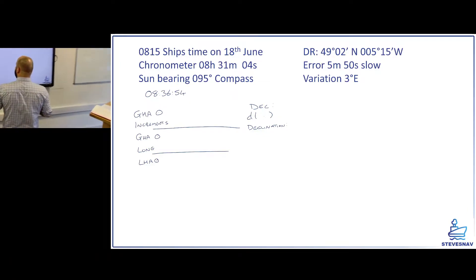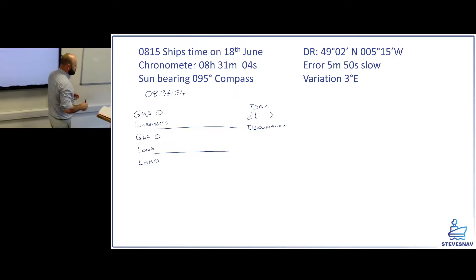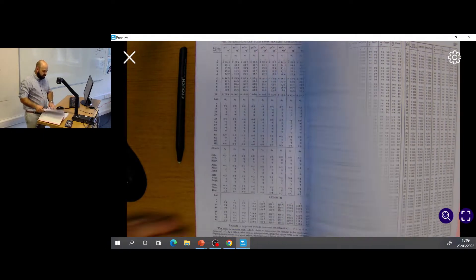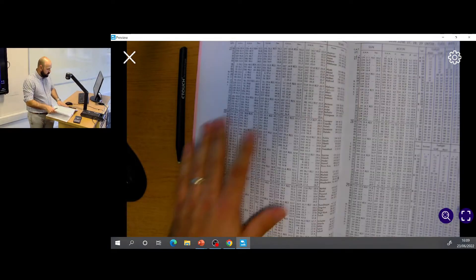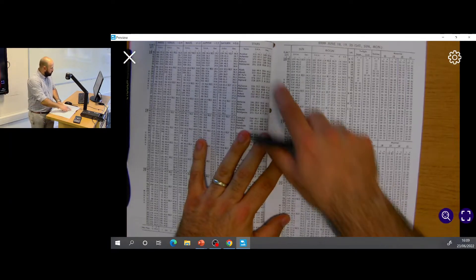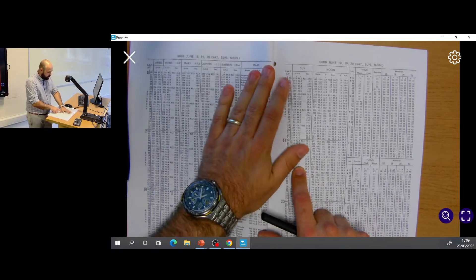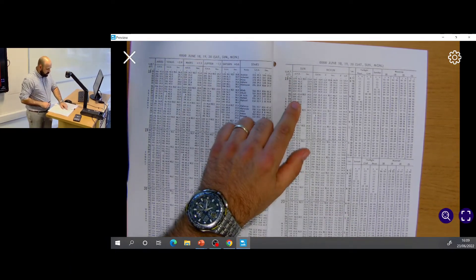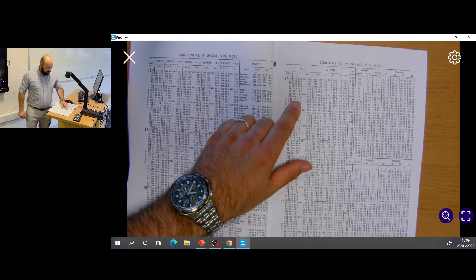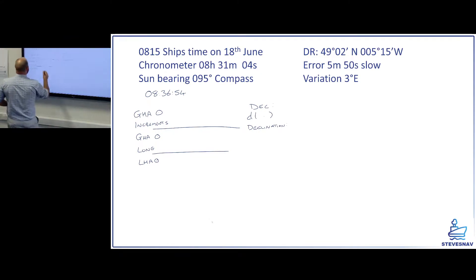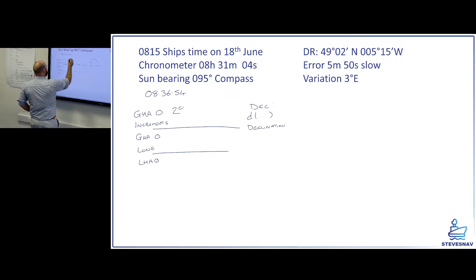So the question tells us it's the 18th of June. So what we're going to do in our almanac, we are going to turn to the 18th of June. We're going to say right, we want the sun. For the 18th of June, we want the sun. So at 0800, the sun's GHA was 299°45.1'. So what we're going to do is jump back to that and say 299 degrees 45.1 minutes.